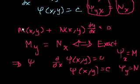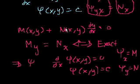A few things to note: M is the partial of xi with respect to x, so in the test we take the partial with respect to y to get the mixed derivative. Similarly, N is the partial of xi with respect to y, so in the test we take the partial with respect to x. If you understood all of this, I think you'll have the intuition behind why the methodology of exact equations works. See you in the next video where we'll actually solve some exact equations.